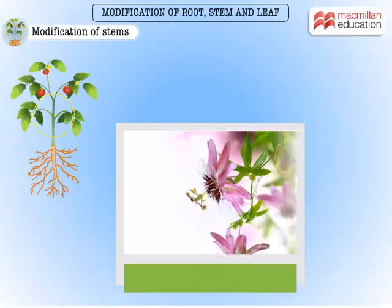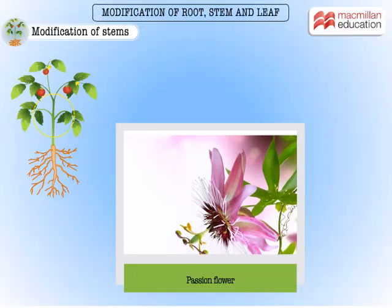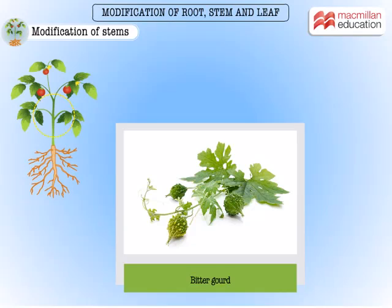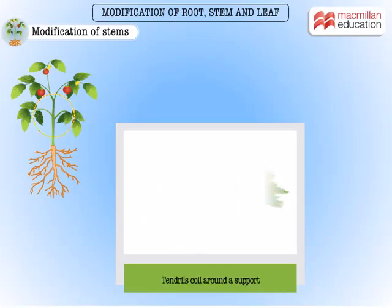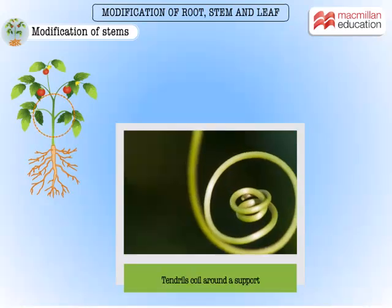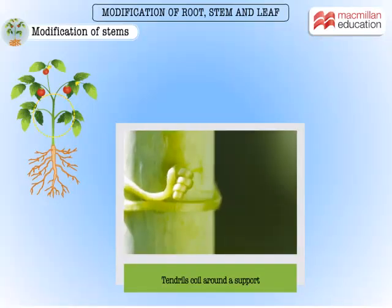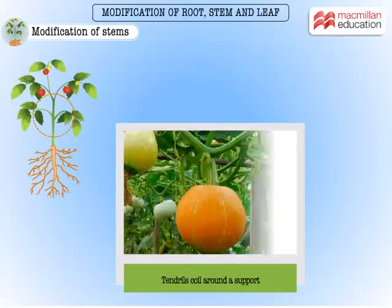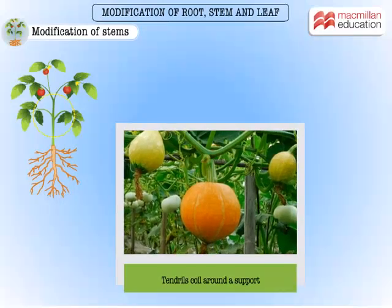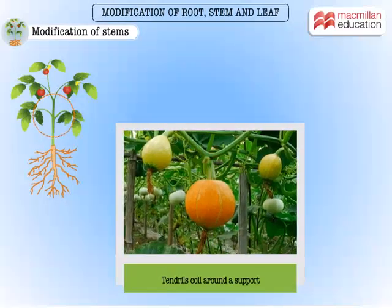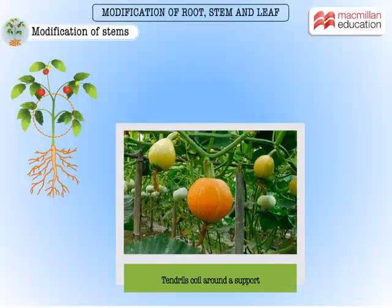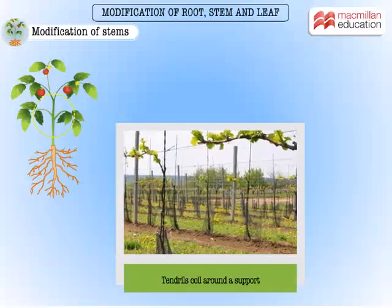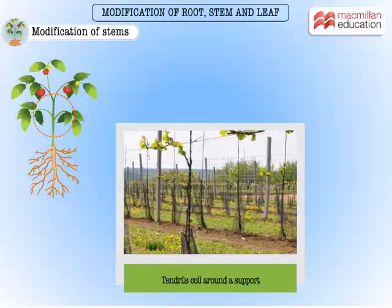Some plants like passion flower, pumpkin, and bitter gourd have weak stems that need support. To help the plant coil around a support, the stems are modified into tendrils. Tendrils coil around a support to help the plant climb. When a tendril comes in contact with an object, it turns and wraps around the object, clinging to it for support.